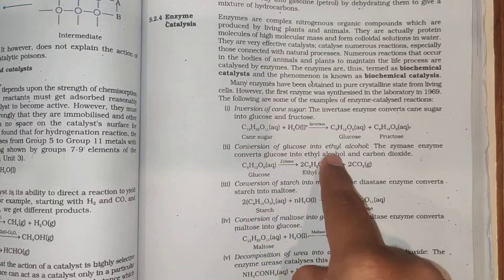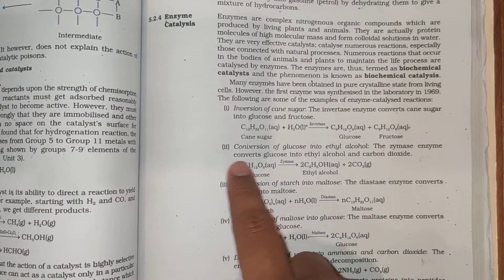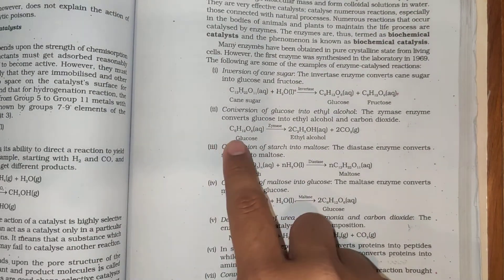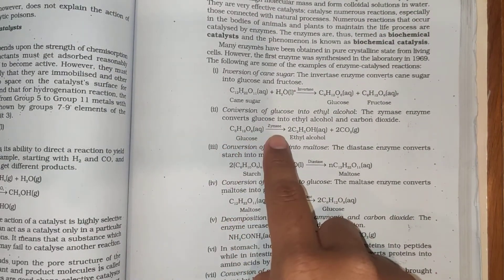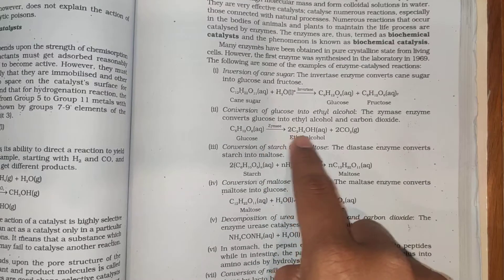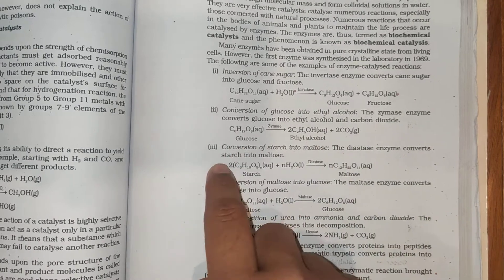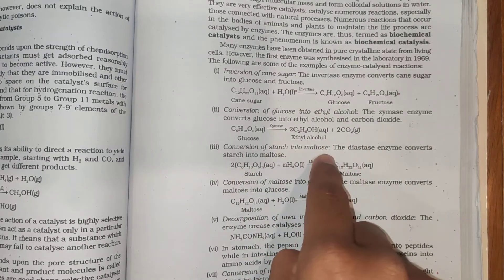Conversion of glucose into ethyl alcohol: The zymase enzyme converts glucose into ethyl alcohol and carbon dioxide. C6H12O6 (aqueous) in presence of zymase forms 2C2H5OH (aqueous) plus 2CO2 (gaseous).